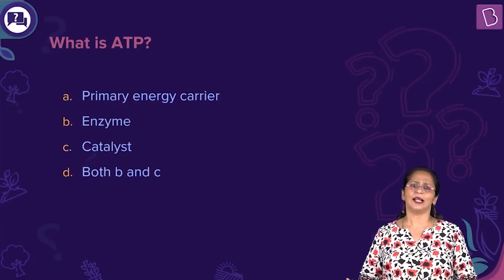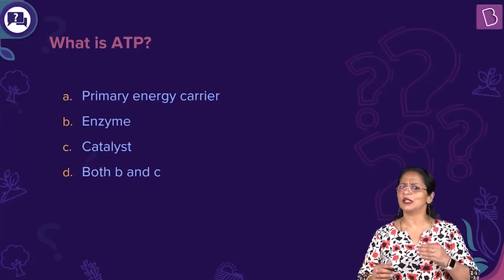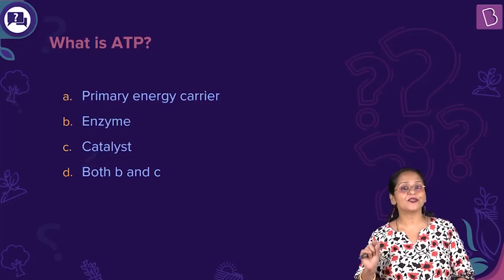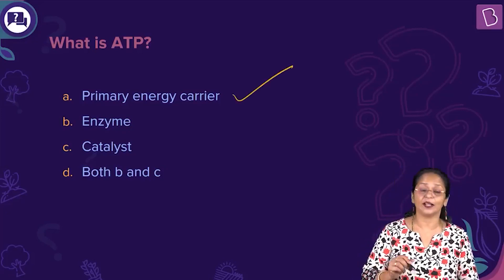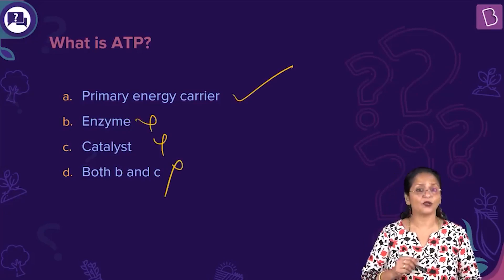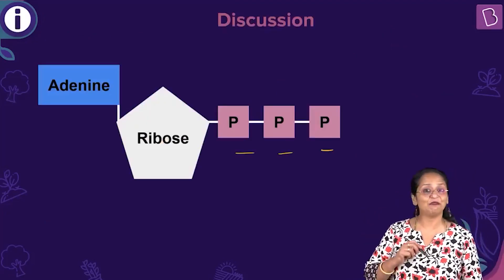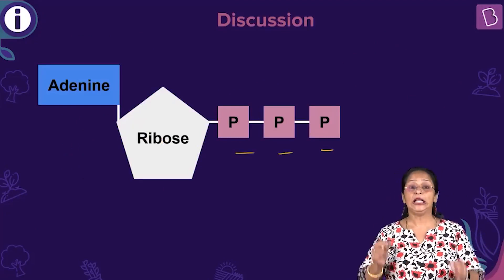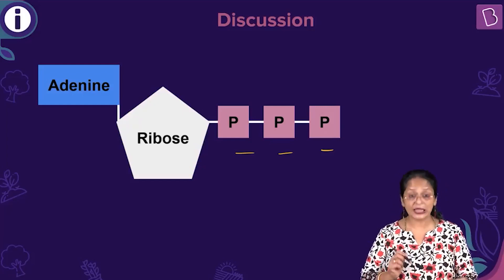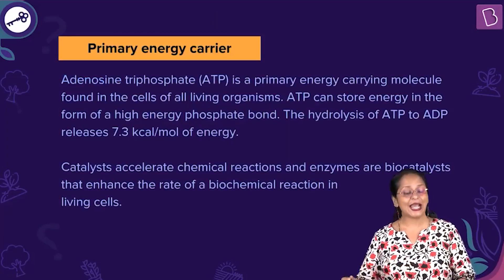What is a catalyst? A catalyst is something that quickens a chemical reaction. Enzymes are called biocatalysts — they do not get affected by the reaction but help in hastening it. ATP, adenosine triphosphate, is a primary energy carrier. In fact, it is called the energy currency of life. B, C, and D are wrong. ATP is made up of adenine, ribose, and three phosphate groups — adenosine triphosphate. The hydrolysis of ATP releases a tremendous amount of energy: 7.3 kcal per mole of energy. That is why we call it the primary energy carrier.